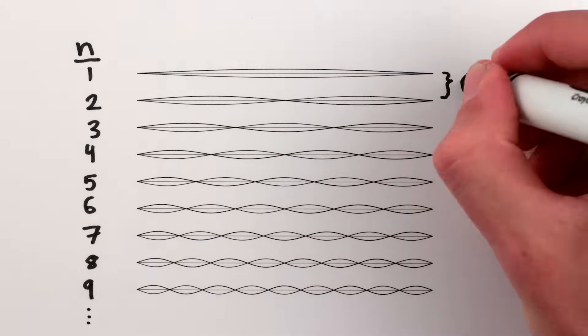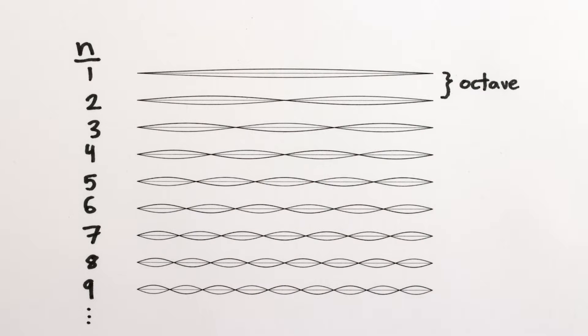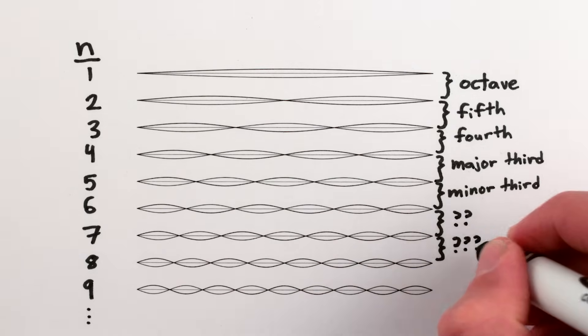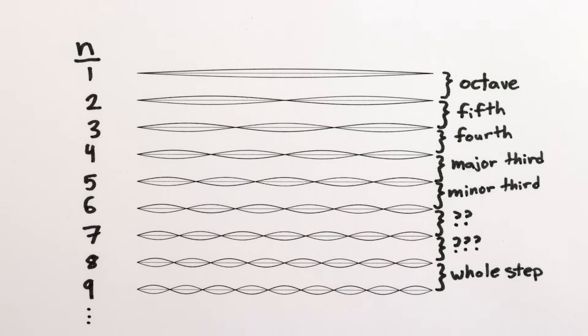In the traditional western scale, one to two bumps is called an octave, two to three is a perfect fifth, three to four is a perfect fourth, then a major third, minor third, some other things that aren't in the scale, and from eight to nine bumps is a major second, or whole step.